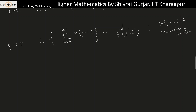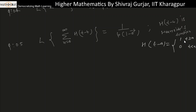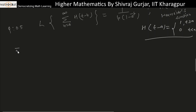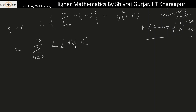Now let's find the Laplace of the summation from n=0 to infinity of H(t-n), where H is the Heaviside function. The Heaviside function H(t-a) equals 1 if t ≥ a, and 0 if t < a. This is also known as the unit step function. By the linear property of Laplace, we can write this as the summation from n=0 to infinity of the Laplace of H(t-n).